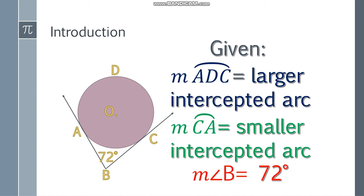So these are the given. We don't know the measure of arc ADC, the larger intercepted arc. And this arc CA, this is the smaller intercepted arc. Visually, we can see that it is smaller. And we only have a value for angle B, which is 72 degrees.